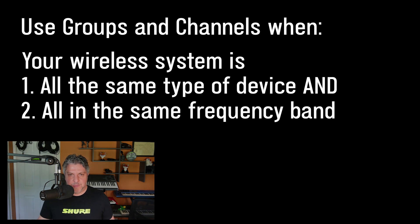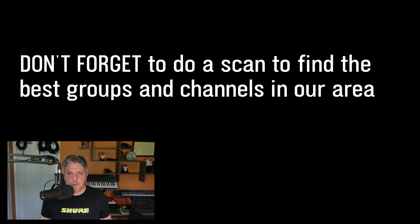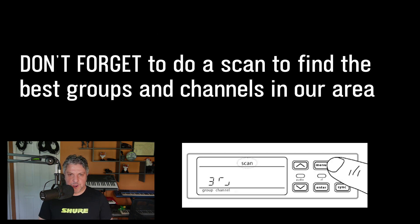To summarize: if I have a wireless system that is all of the same type of device and they're all in the same frequency band, I can use groups and channels to very quickly and efficiently coordinate all of my devices. As long as they are all in the same group and each device is on a different channel in that group, I'm set and good to go. Not only that, every Shure wireless receiver has a group scan feature so that you can find the best group to use for all of your devices in any environment.